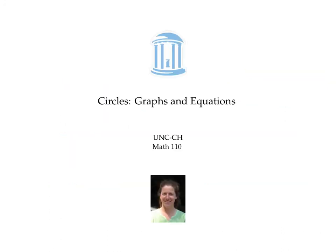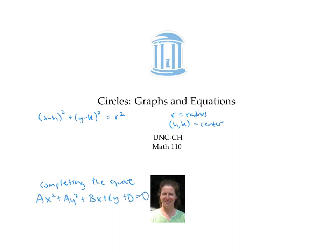In this video, we found the standard equation for a circle, x minus h squared plus y minus k squared equals r squared, where r is the radius and the point h, k is the center of the circle. We also showed the method of completing the square. When we have the equation of a circle in disguise, completing the square can help us transform it into standard form.